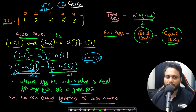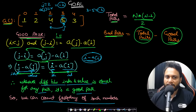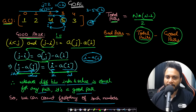For example, if the current index j=3 has value 5, then j minus a[j] = 3 minus 5 = minus 2. Checking the left side: index 2 with value 4 gives 2 minus 4 = minus 2. Since both equal minus 2, they form a good pair. We process left to right, maintaining a frequency map of (index minus value) differences seen so far, and each time we find a match, we add the current frequency to the good pair count.